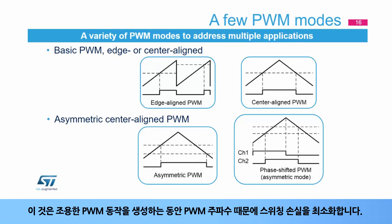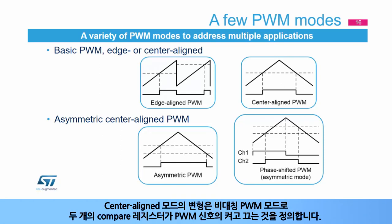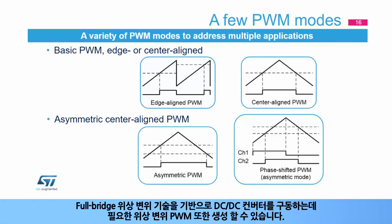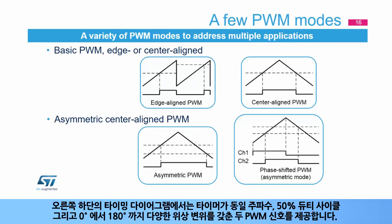Center-aligned mode minimizes switching losses due to PWM frequency while guaranteeing silent PWM operation. A variant is the asymmetric PWM mode, where two compare registers define the turning on and off of the PWM signal, providing higher resolution for pulse width setting. It also allows the generation of phase-shifted PWM signals necessary to drive DC-DC converters based on the full bridge phase-shifted topology. In the bottom right timing diagram, the timer provides two PWM signals with identical frequency, 50% duty cycle, and a phase shift varying from 0 to 180 degrees.